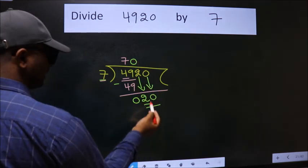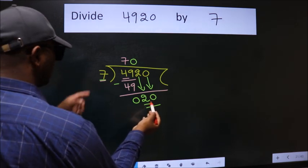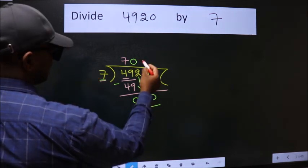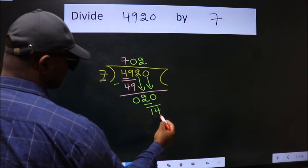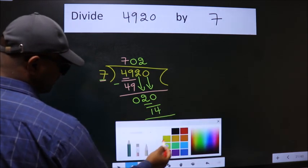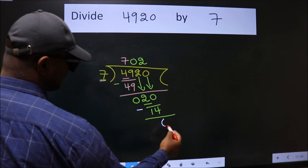So, 20. A number close to 20 in 7 table is 7 twos 14. Now, we subtract. We get 6.